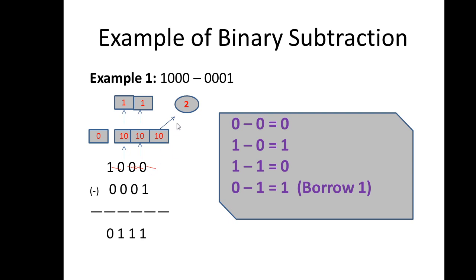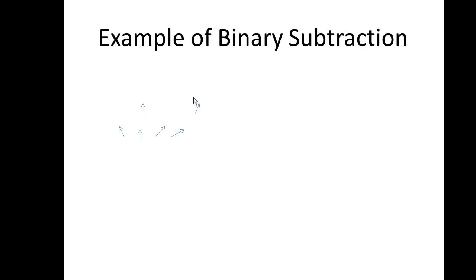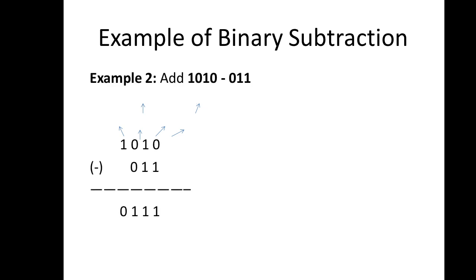So the first position: 10 minus 1 equals 2 minus 1 equals 1. In the borrow part, 1 minus 0 equals 1. Then 1 minus 1 minus 0 equals 1. The last part was 0, so we write 0. The final answer for this example is 0111.